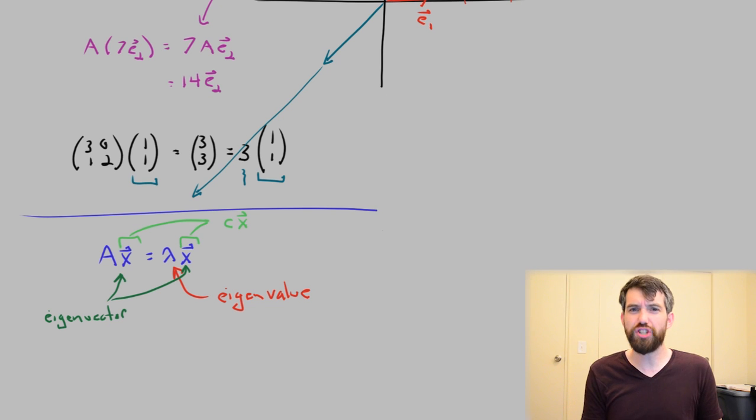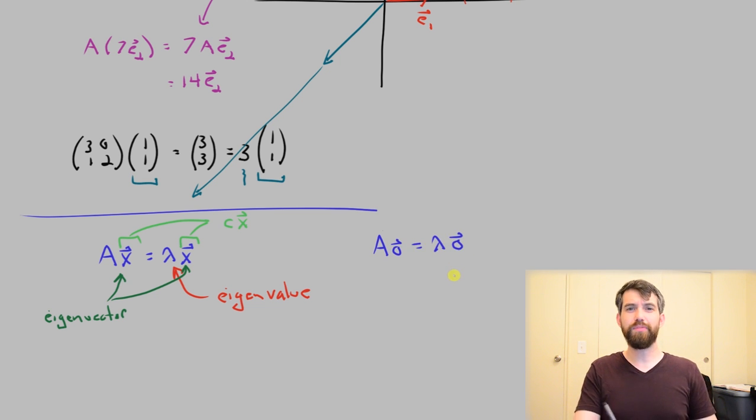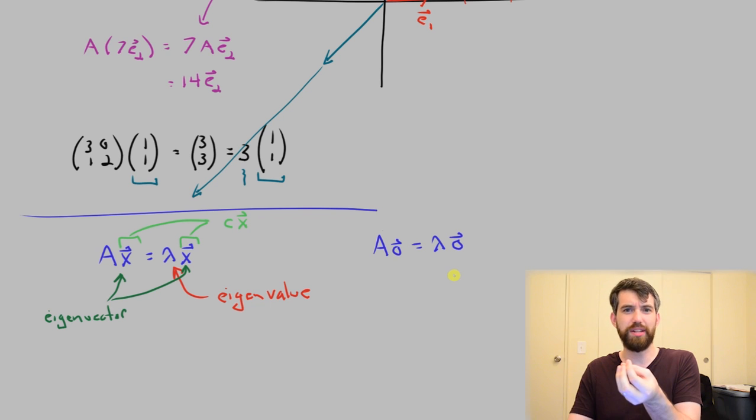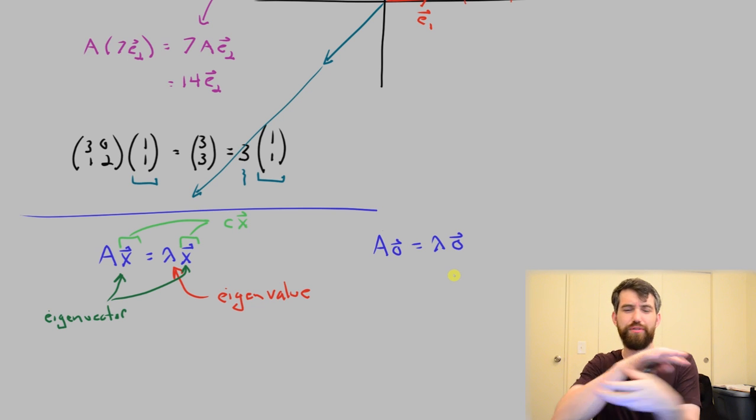By the way, this equation is sort of true. It's for sure the case that A times 0 is equal to lambda times 0. But this is true for every value of lambda, and it doesn't tell us anything interesting. This is just saying the vector that stays at the origin, well, it doesn't matter what A does multiplying to it. Of course, it always stays at the origin. Nothing actually happens.